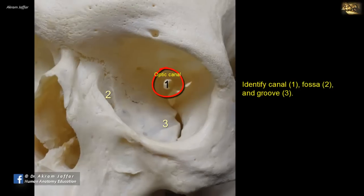The optic canal communicates between the orbit and the middle cranial fossa, and through this optic canal passes the optic nerve and the ophthalmic artery. Remember that the optic nerve is covered by meninges and cerebrospinal fluid.